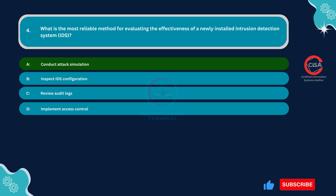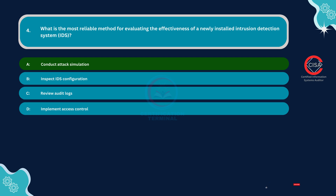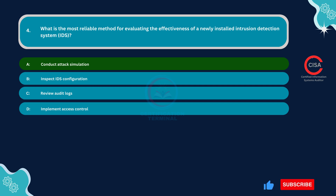Attack simulation involves mimicking real-world attack scenarios to assess how effectively the IDS detects and responds to different types of threats. By simulating various attack techniques such as port scanning, malware infiltration, or denial-of-service attacks, organizations can gauge the IDS's ability to identify and mitigate these threats. Attack simulation allows for a comprehensive evaluation of the IDS's capabilities across different attack vectors and scenarios, providing insights into detection accuracy, response time, and effectiveness in identifying both known and unknown threats.